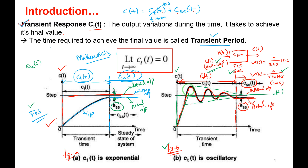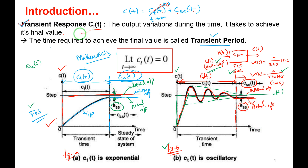In the second order system response, you can observe variations in the output before achieving the steady state. Once the steady state is achieved, the transient vanishes at time t equal to infinity. If the actual output equals the desired output, the steady state error is 0. Otherwise, the difference between desired and actual output represents the steady state error.